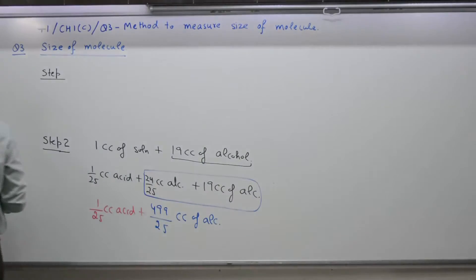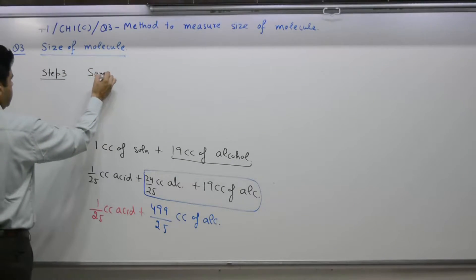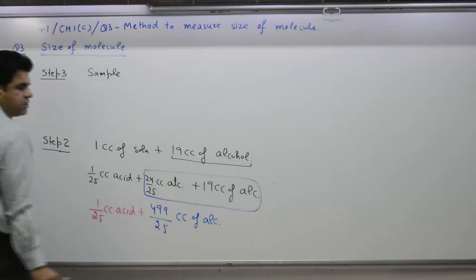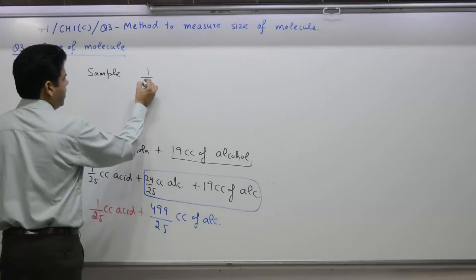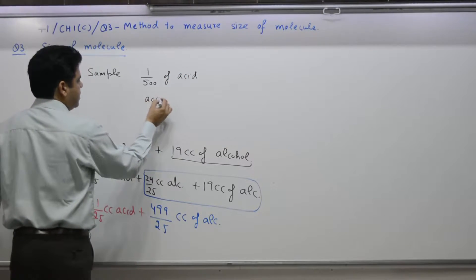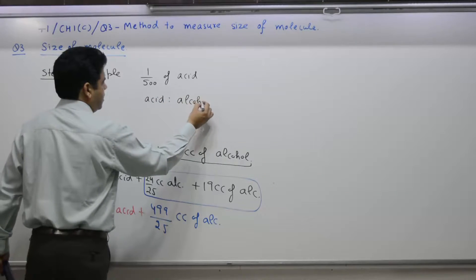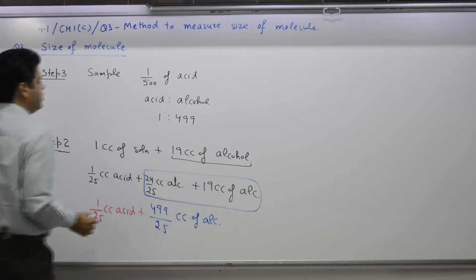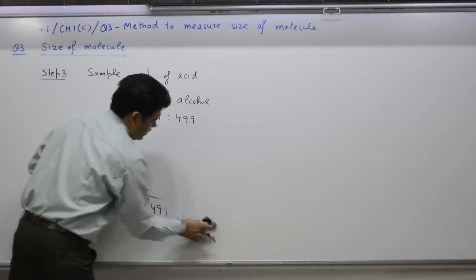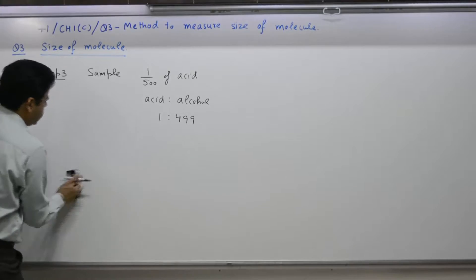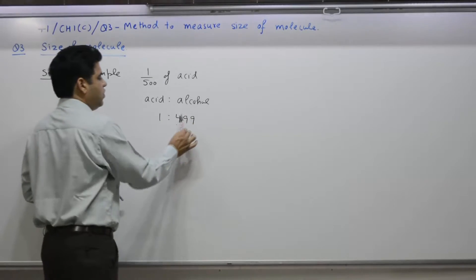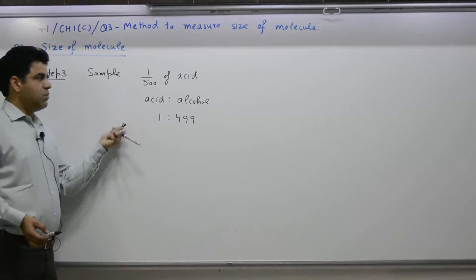Step number 3: Take any sample of the solution. It has 1 unit acid and 499 units alcohol, so any sample will be 1/500 acid. The acid to alcohol ratio is 1 is to 499. The objective of steps 1, 2, and 3 is to make a solution where acid is 1 unit and alcohol is 499 units.